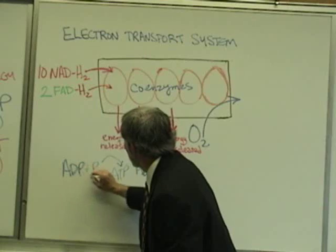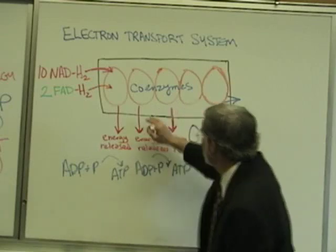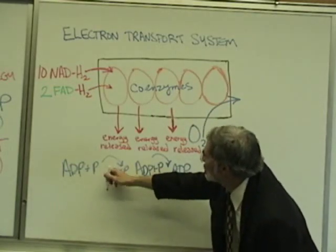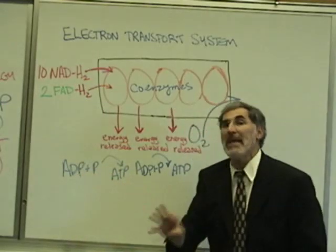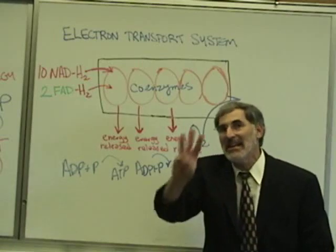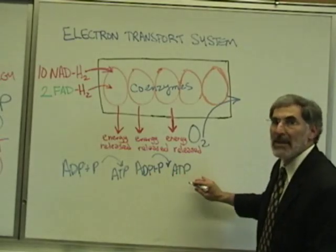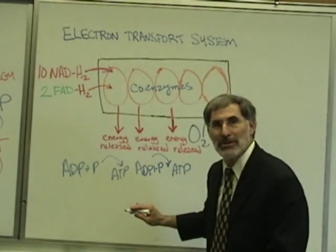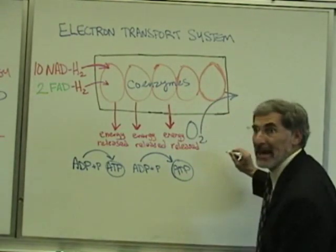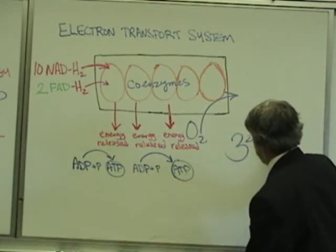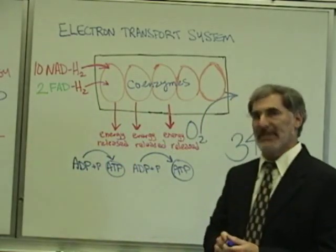This energy being released from transferring these hot potato hydrogen atoms from one coenzyme to the next is being used to join a phosphate onto adenosine diphosphate to form that high energy nucleotide called adenosine triphosphate. This is where all the ATPs are being produced. How many ATPs are produced? A total of 34 ATPs are produced in this last series of reactions called the electron transport system.